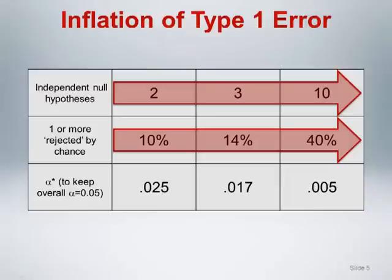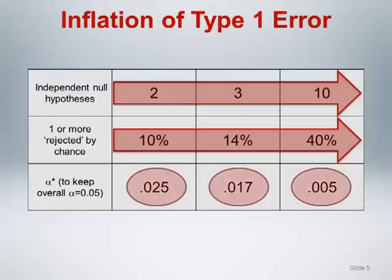For two independent null hypotheses tested, the chance of rejecting one or both of the hypotheses is 10%. For 10 hypotheses, the chance of rejecting one or more of the true null hypotheses is a whopping 40%. The third row in this table displays the alpha level — what I am calling alpha star — needed for each individual test in order to maintain an overall 0.05 level of significance across all comparisons. The required individual alpha level decreases dramatically as the number of tests increases, resulting in the need for extremely small p-values to reject any individual hypothesis.